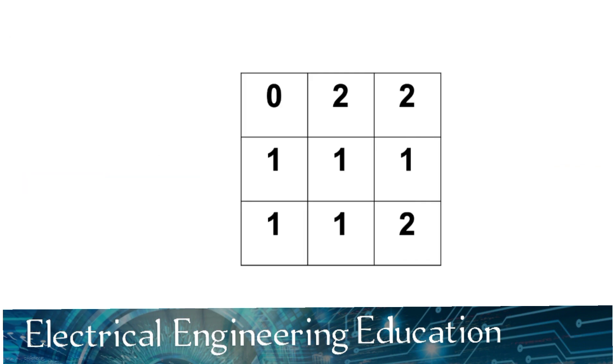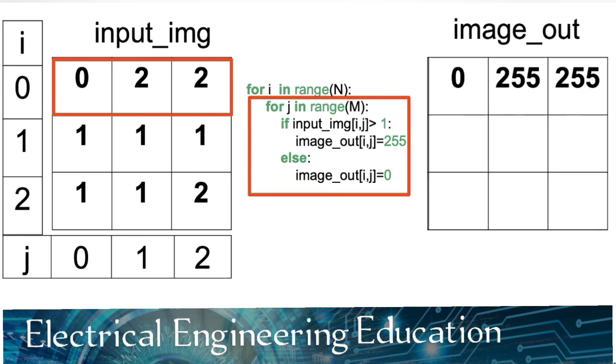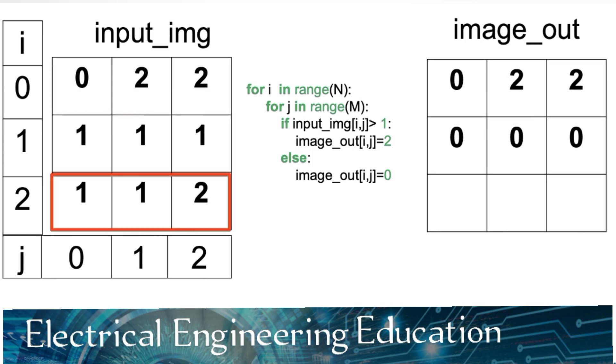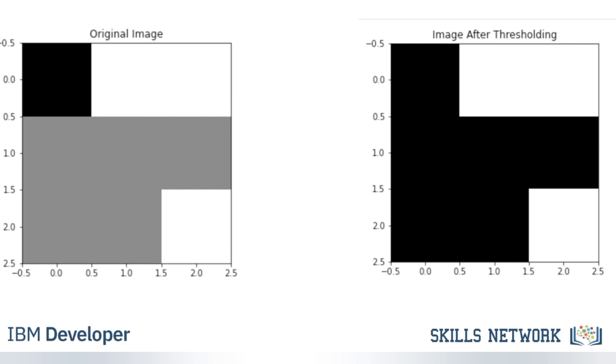Let's do an example. Consider the following array. In this case, the threshold value is 1, and the min value is 0, and the max value 255. The first loop increments through the rows. For each column in input IMG, we check the condition. If the value is greater than 1, we set the corresponding element in the image out to 255. Otherwise, we set it to 0. We repeat the process for the second row. As none of the columns are less than 1, all the corresponding rows in image out is set to 0. We repeat the process for the final row. The result is all the values in the new image array are white or black.